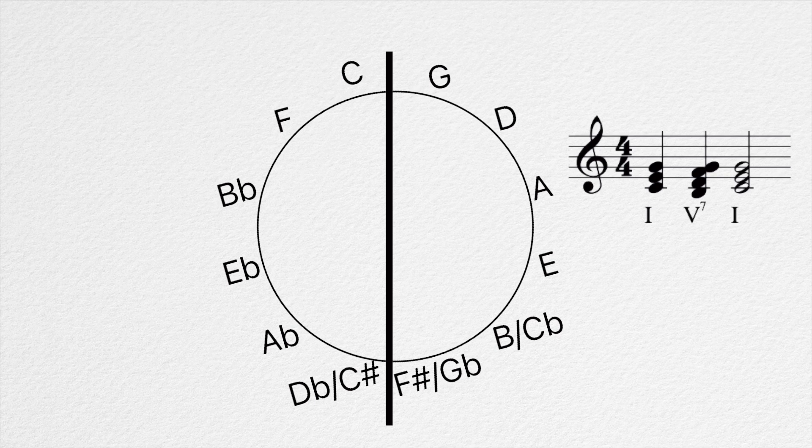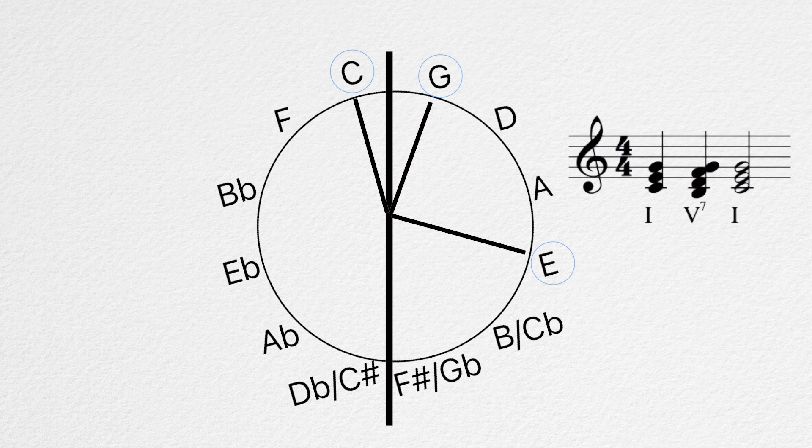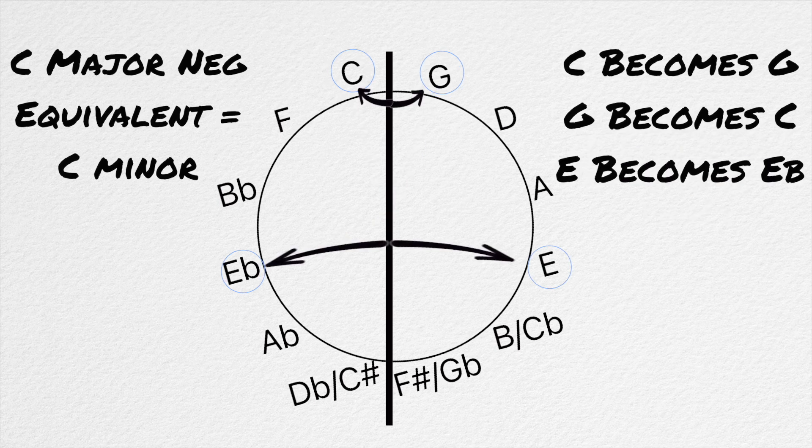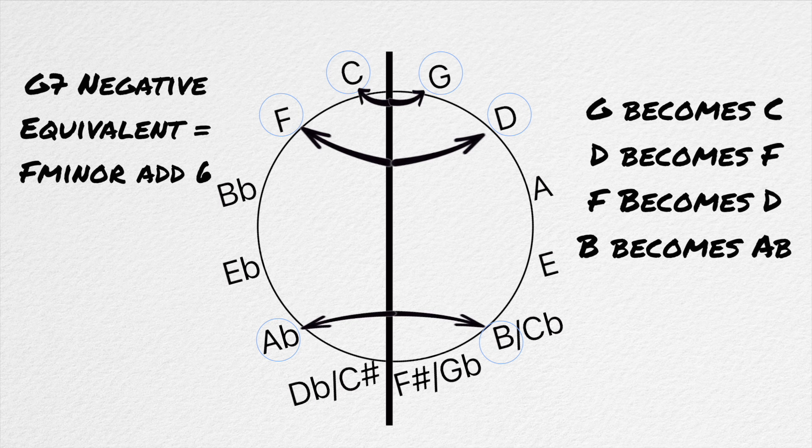1, 5, 7, 1 looks like this on the circle. And its negative equivalent looks like this. That negative equivalent was found by simply flipping the notes of the chord over the center axis. G becomes C, D becomes F, B becomes A flat, and F becomes D. You can rewrite entire chord progressions in this way to get some very cool results.